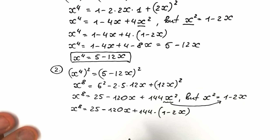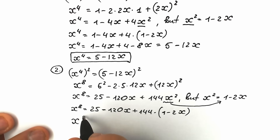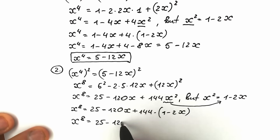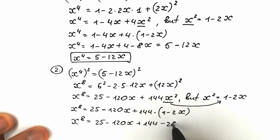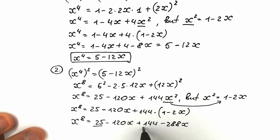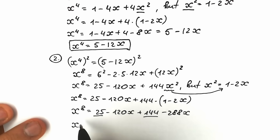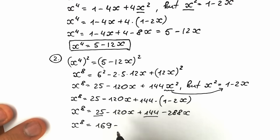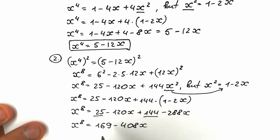Simplifying: we have x to the eighth power equal to 25 minus 120x plus 144 minus 288x. Combining constants: 144 plus 25 gives 169. Combining x terms gives minus 408x. So x to the eighth power equals 169 minus 408x.